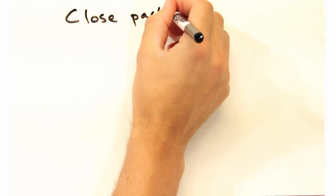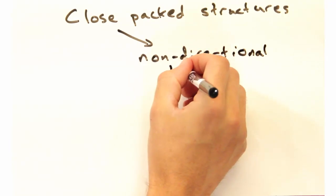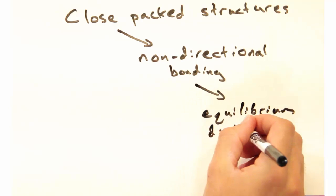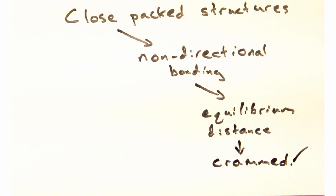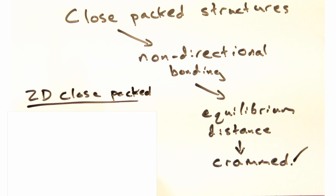Now the final structures we want to introduce are called the close-packed structures. In materials that show no preferred direction of bonding, Coulombic attraction and repulsion forces compress and expand the atoms. Eventually the nuclei settle into an equilibrium distance from one another. So we call it close-packed because literally the atoms try to cram themselves as tightly as they can to each other.